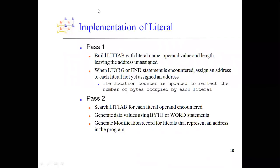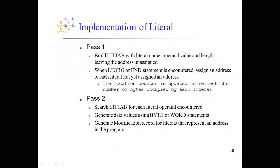You must also generate object codes for constants. When you see EOF defined as a literal with its address further down, you will need to generate 454F46. This process is similar to generating object codes for normal instructions. In Pass 1, you enter the literal name, operand value, and length in the LITTAB and leave the address unassigned, because you have not yet encountered LTORG or reached the end of the program.